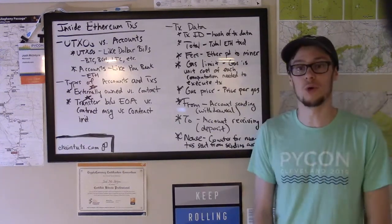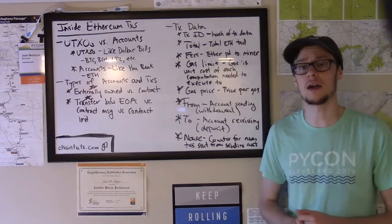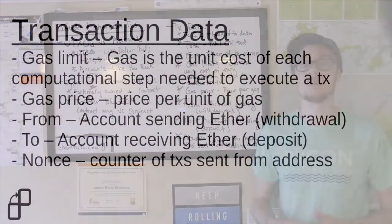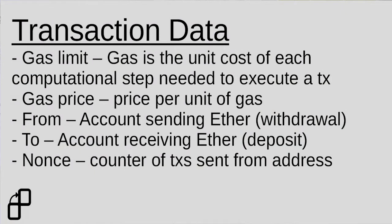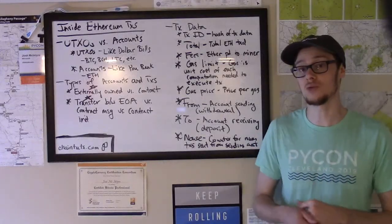Gas is a concept more unique to Ethereum because you don't see this on currency-based blockchains like Bitcoin, Bitcoin Cash and Litecoin. Gas is a unit cost of each computation required to execute a transaction. Gas is used when sending funds between externally owned accounts, and mostly for smart contracts. When you deploy smart contract code, to prevent things like infinite loops, there's a limit set on how many computations your contract is allowed to use — and that's called gas.